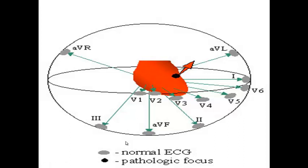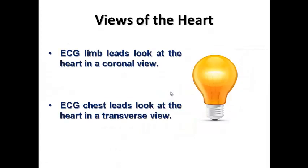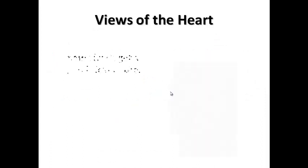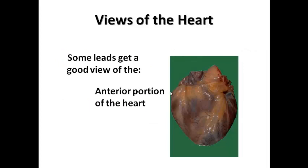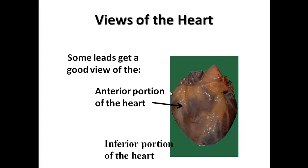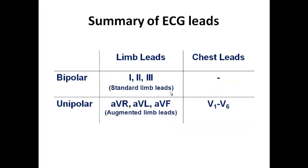To summarize the viewing planes: limb leads see the heart from a frontal or coronal plane — like seeing the front surface of the heart. Chest leads see the heart from a transverse section — like a bird's-eye view from above. The inferior portion of the heart is seen by some limb leads, the anterior portion by the chest and limb leads, and the lateral portion by both some limb leads and some chest leads.